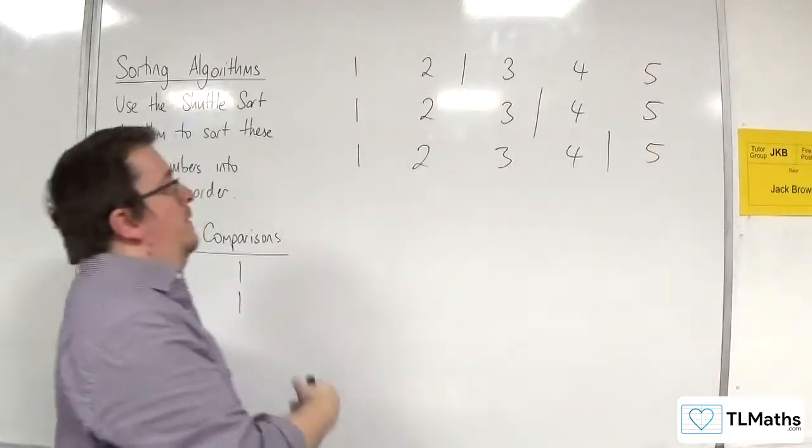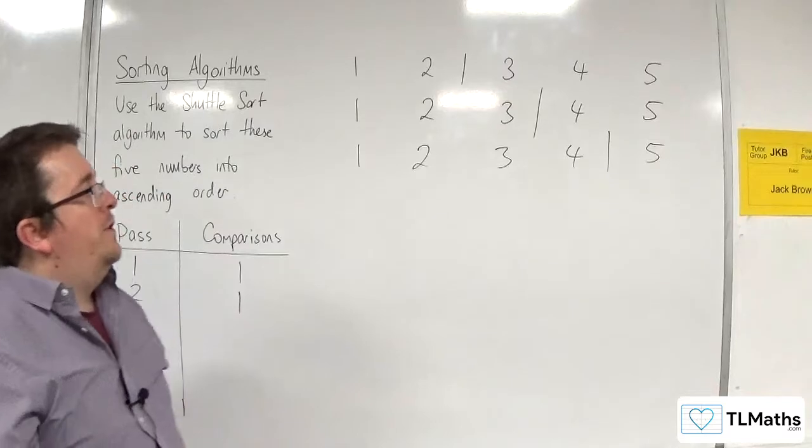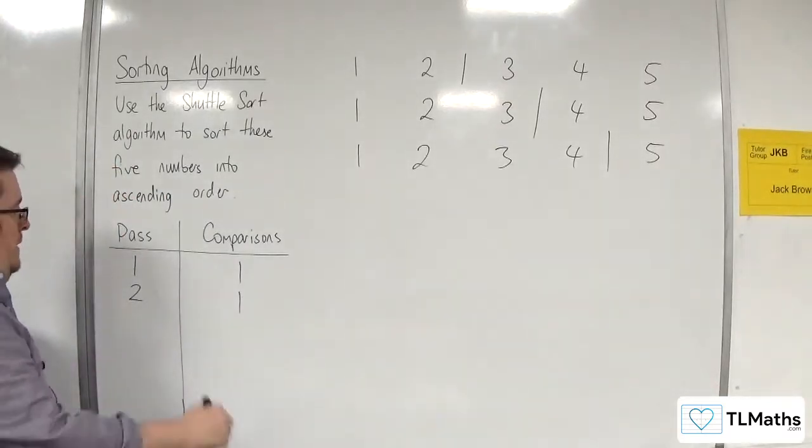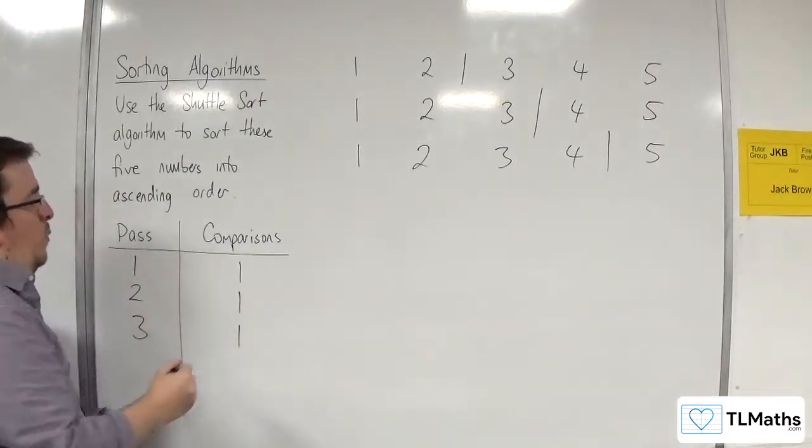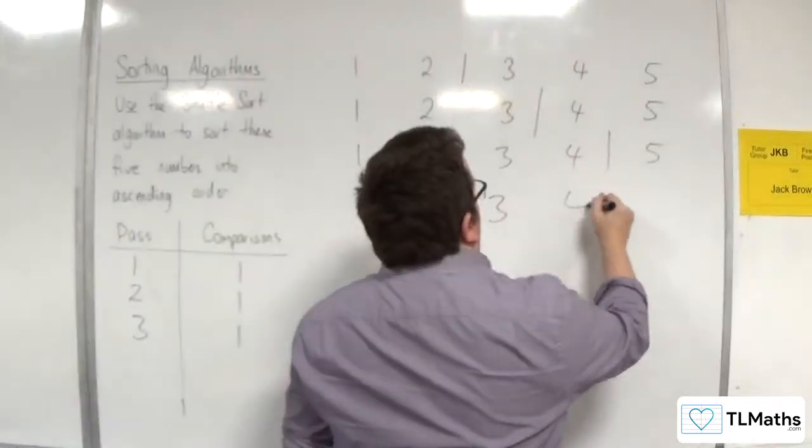Then we bring in 4. 4 gets compared with 3. They're already in the correct order, so no swap is necessary. On the third pass we make 1 comparison. And then 1, 2, 3, 4, 5.